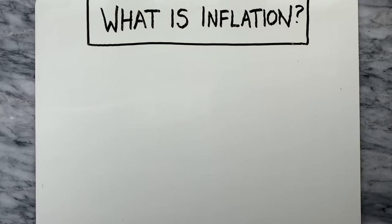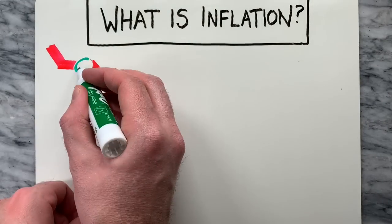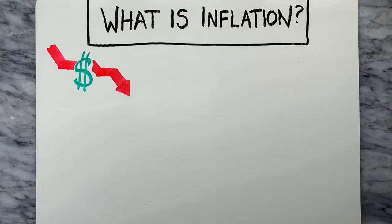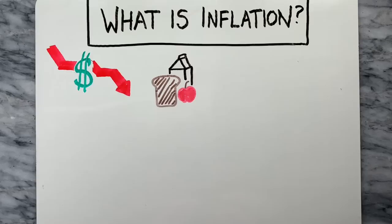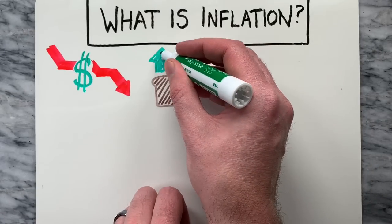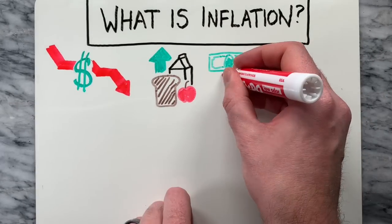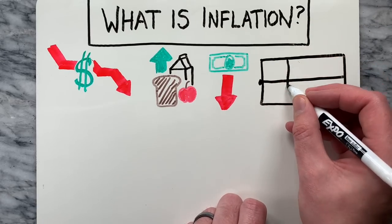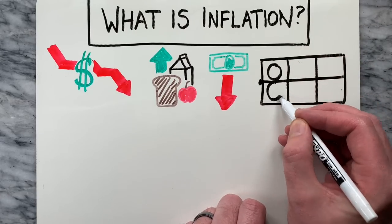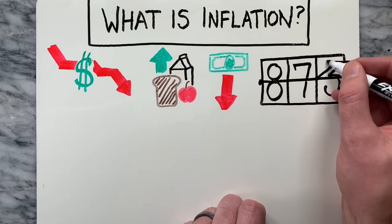First, what is inflation? Inflation is the decline of purchasing power of a given currency over time. In other words, take the average price of a basket of selected goods and services in the economy and estimate the rate at which the purchasing power declines. You can also look at it as the rise in the general level of prices, often expressed as a percentage.